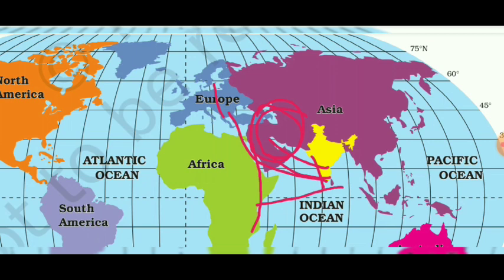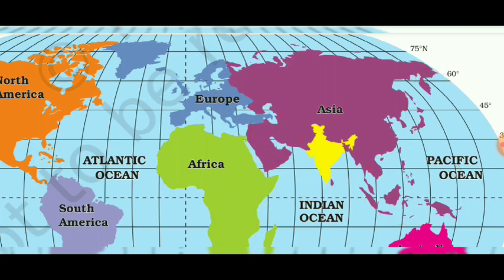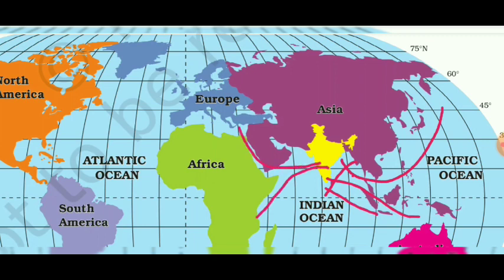The East Asian countries include China, Japan, and Korea. The Southeast Asian countries are also connected to India. India is connected with these countries from its eastern coast. Indian ships travel to these countries through these eastern sea routes. In this way, India is well connected with all the countries of the world through Indian sea routes.